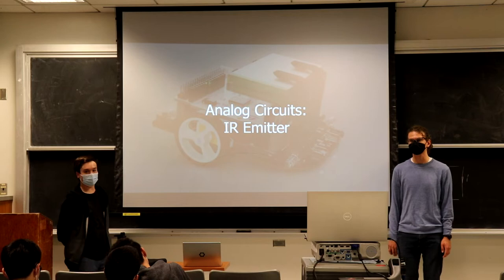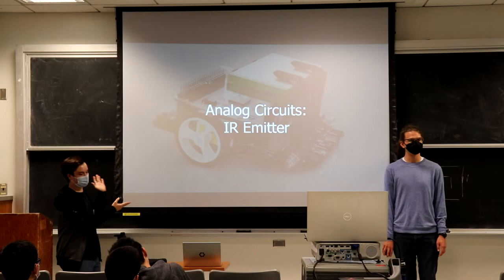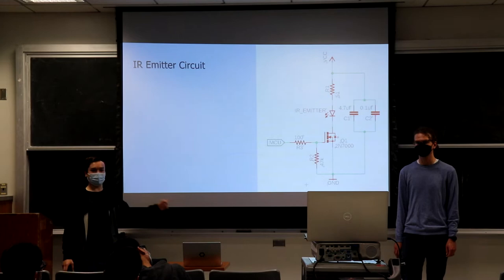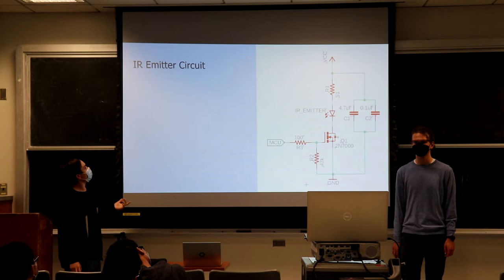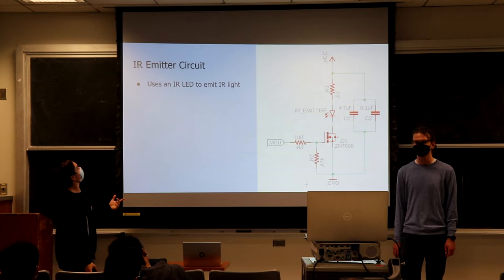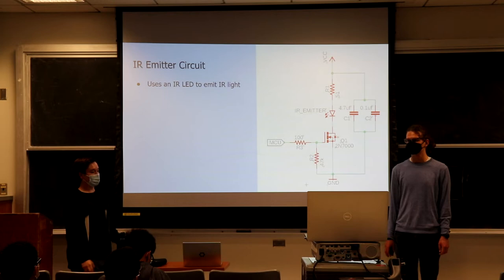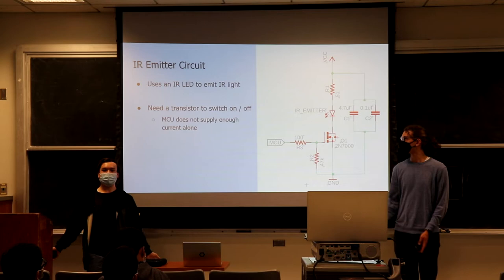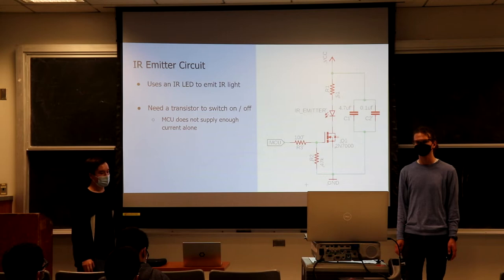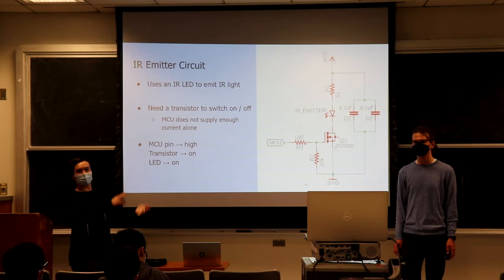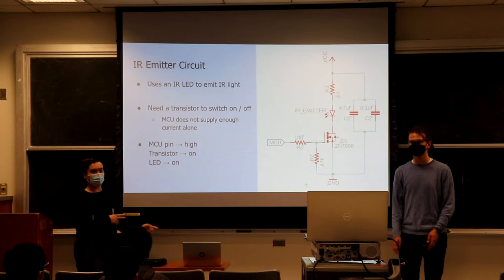Now we're going to talk about the analog circuits and the emitter part first. We have our IR emitter — an LED — and a transistor to switch it on and off. This is because the microprocessor can't supply enough current alone, just like our motors. We need something to switch the LED on and off instead of just our pins, so we have a transistor there. Essentially, the way it works is that we turn our MCU pin high, that's going to turn the transistor on and turn our LED on.